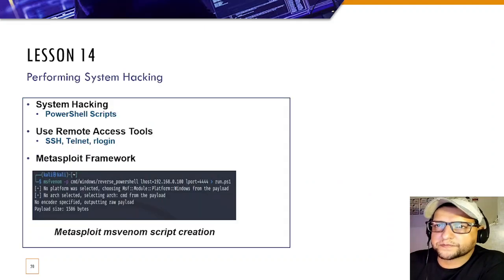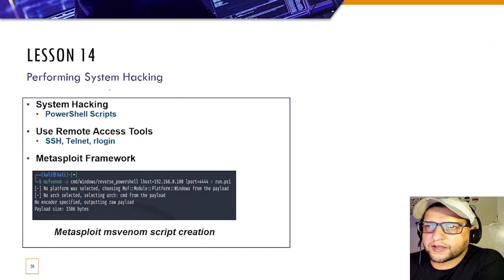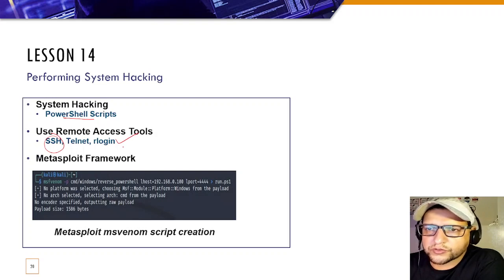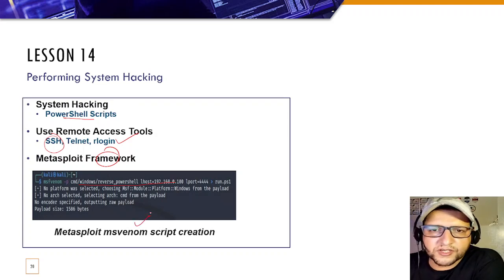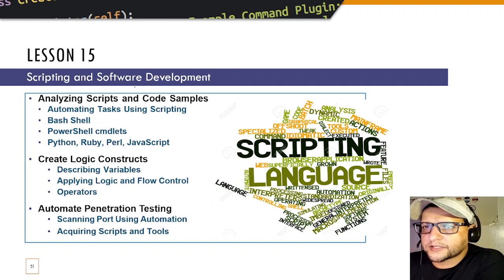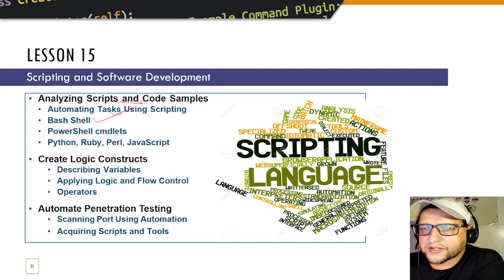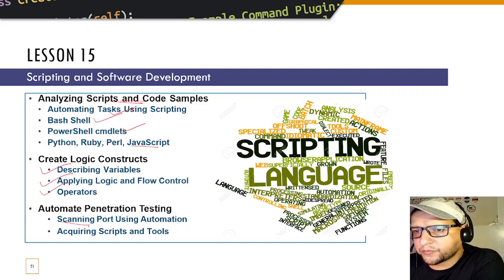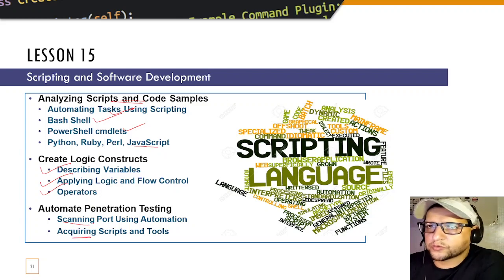Lesson 14 covers system hacking using PowerShell scripts, SSH, Telnet, rlogin, and the Metasploit Framework to create shells like MSF Venom and deliver exploits to targets. Lesson 15 covers scripting and software development — analyzing scripts and code samples, automating tasks using Bash, PowerShell cmdlets, Python, Ruby, Perl, and JavaScript, creating logic constructs, describing variables, applying flow control, using operators, and automating pen testing through port scanning and acquiring scripts and tools.